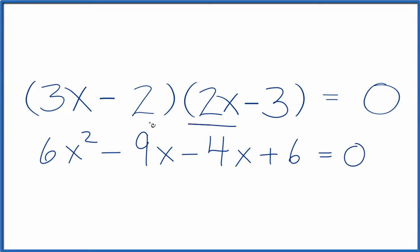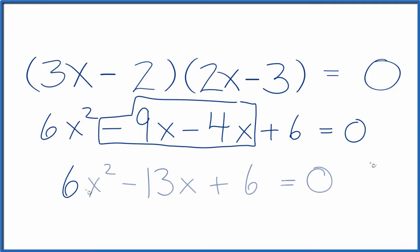We can combine these two terms since they're both x, and we get 6x squared minus 13x plus 6 equals 0.